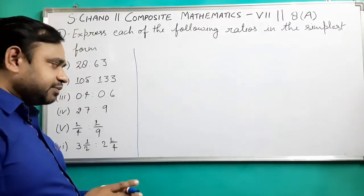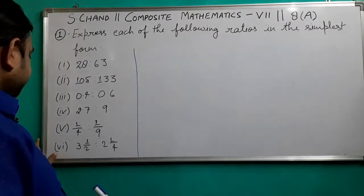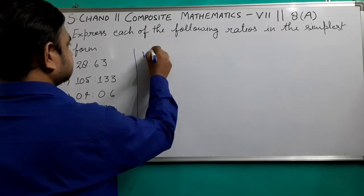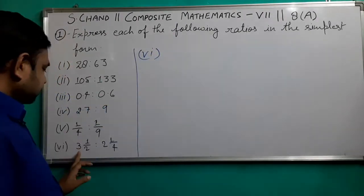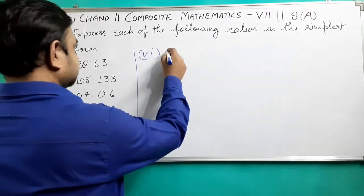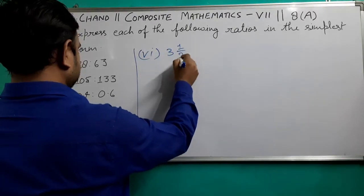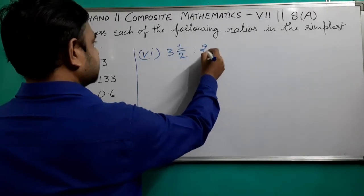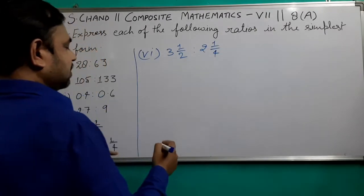Now, we have our question number 6, part 6, where it is written 3 whole 1 upon 2 ratio 2 whole 1 upon 4. 3 whole 1 upon 2 ratio 2 whole 1 upon 4.